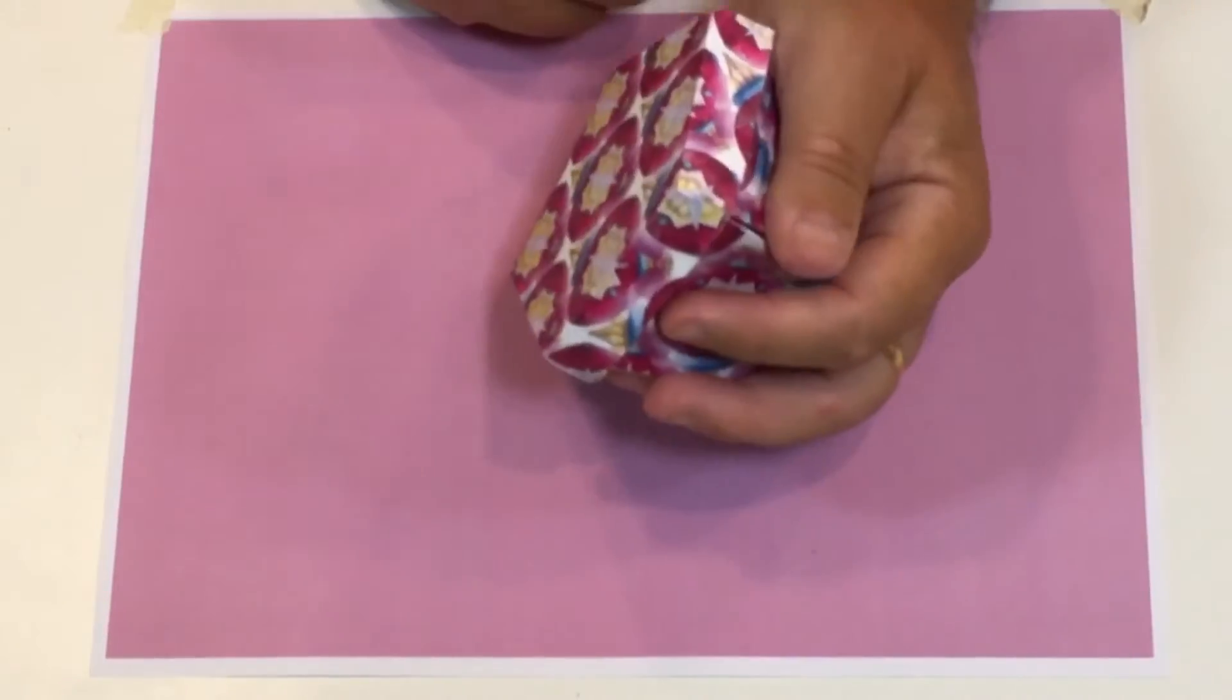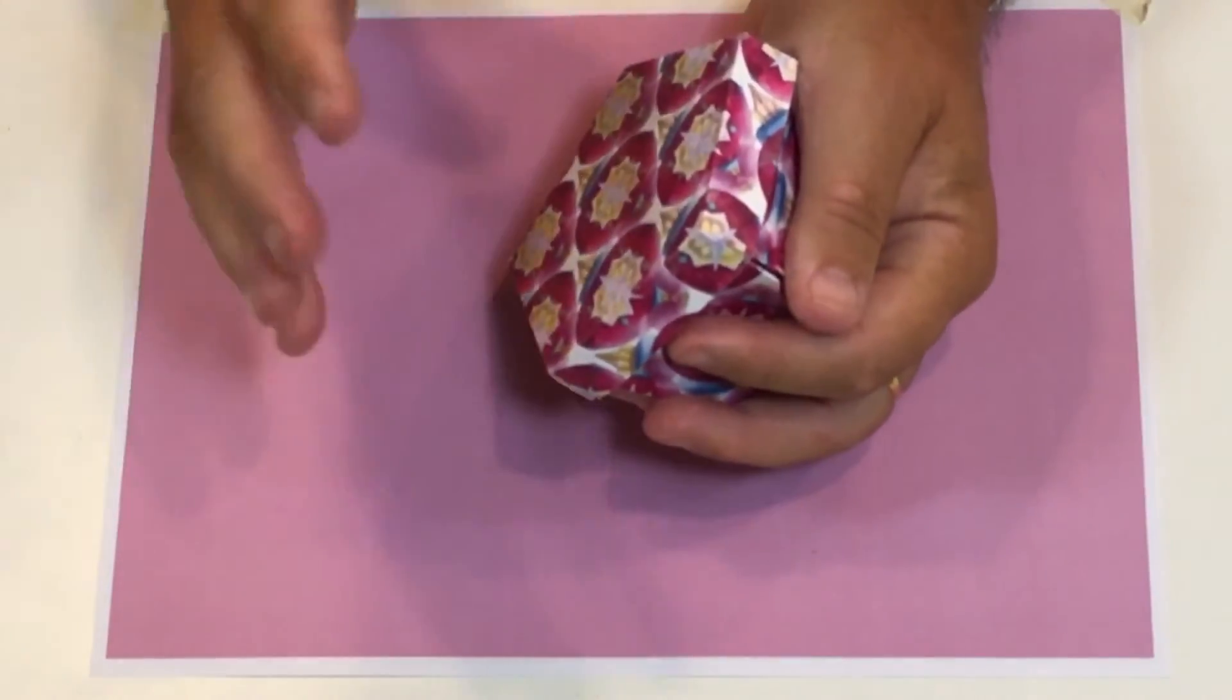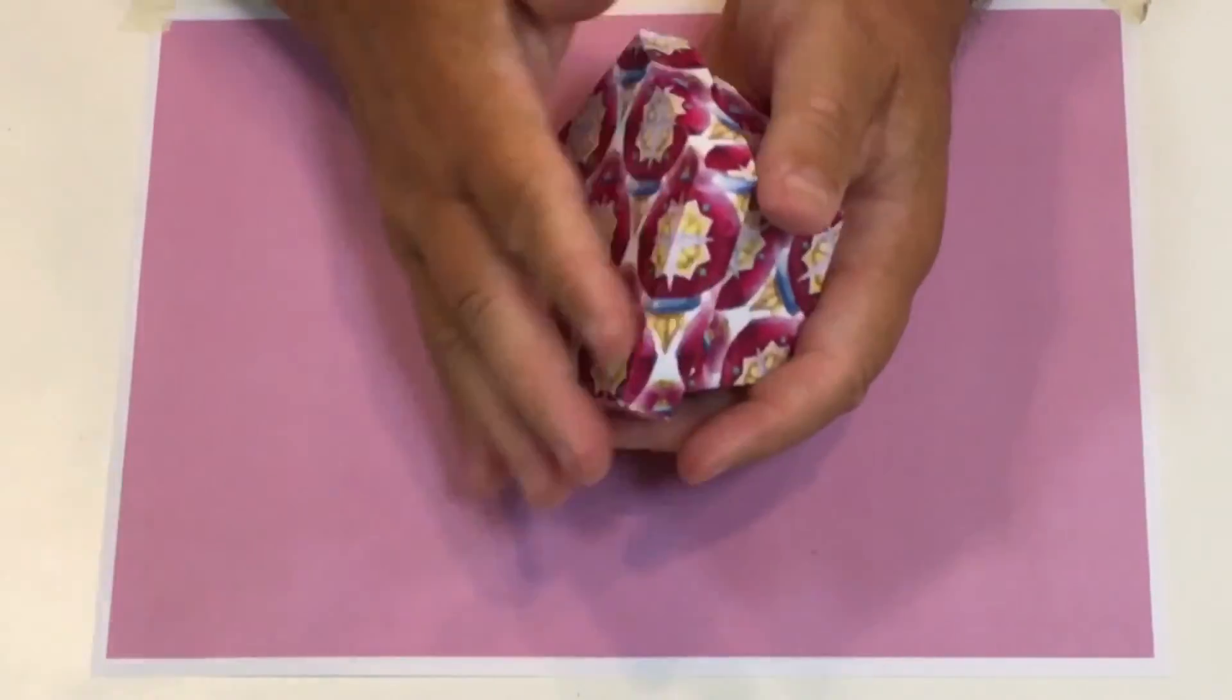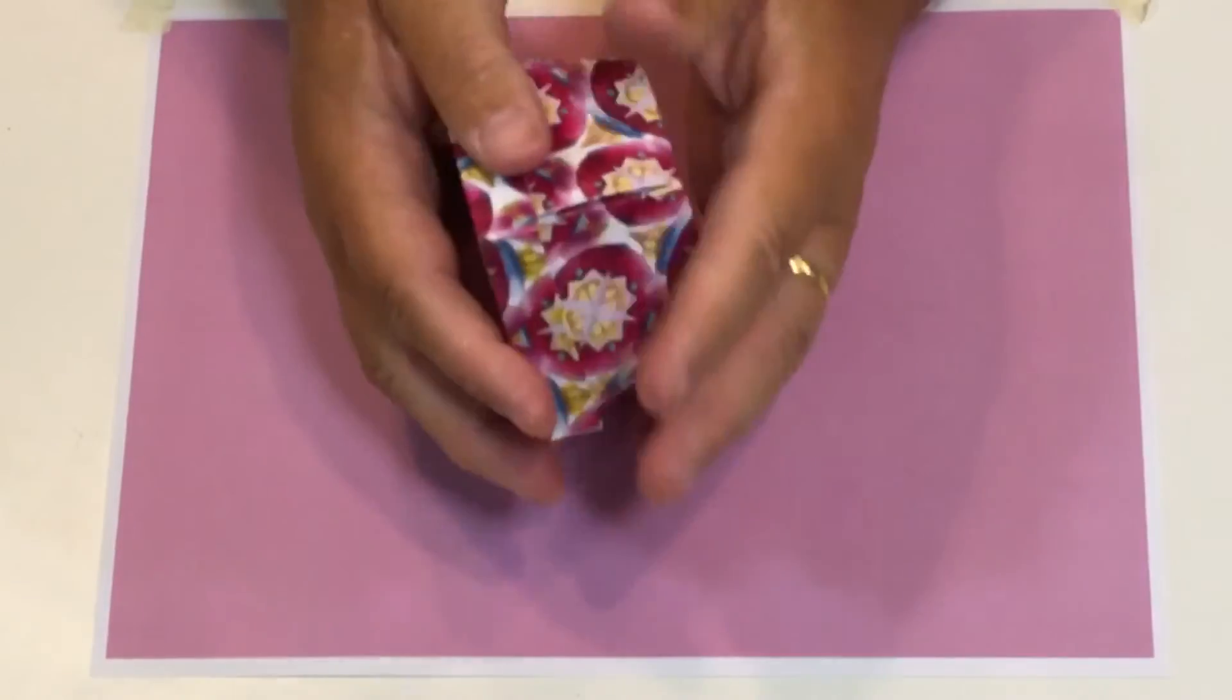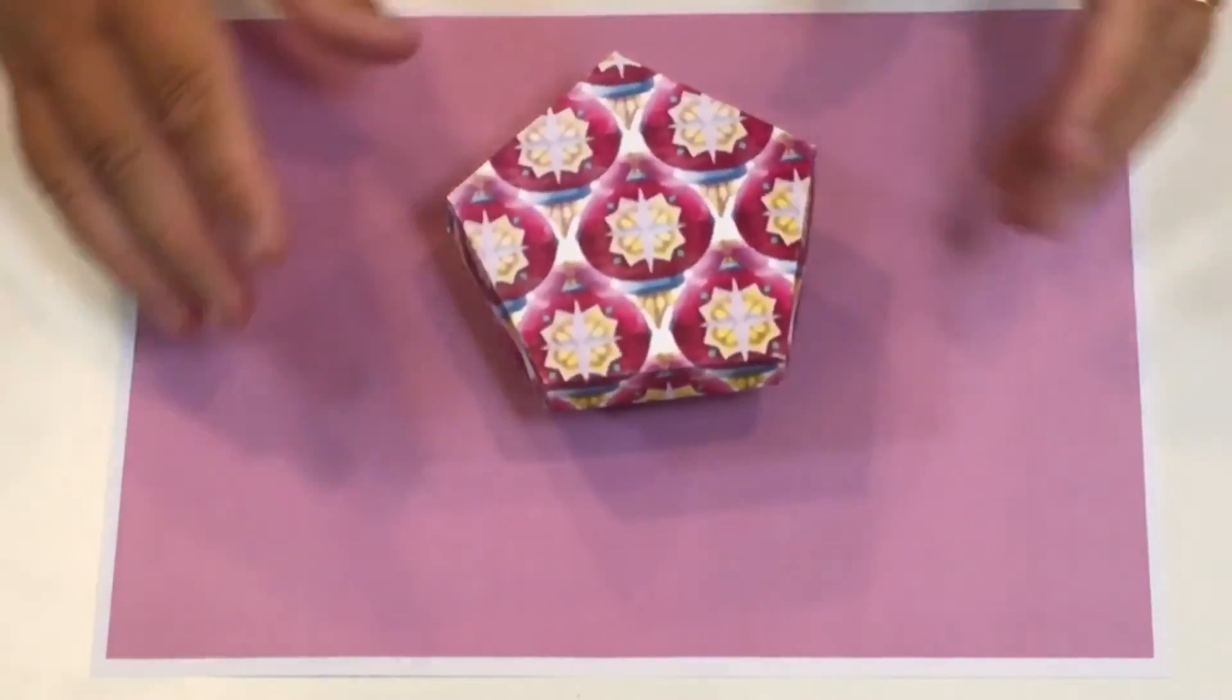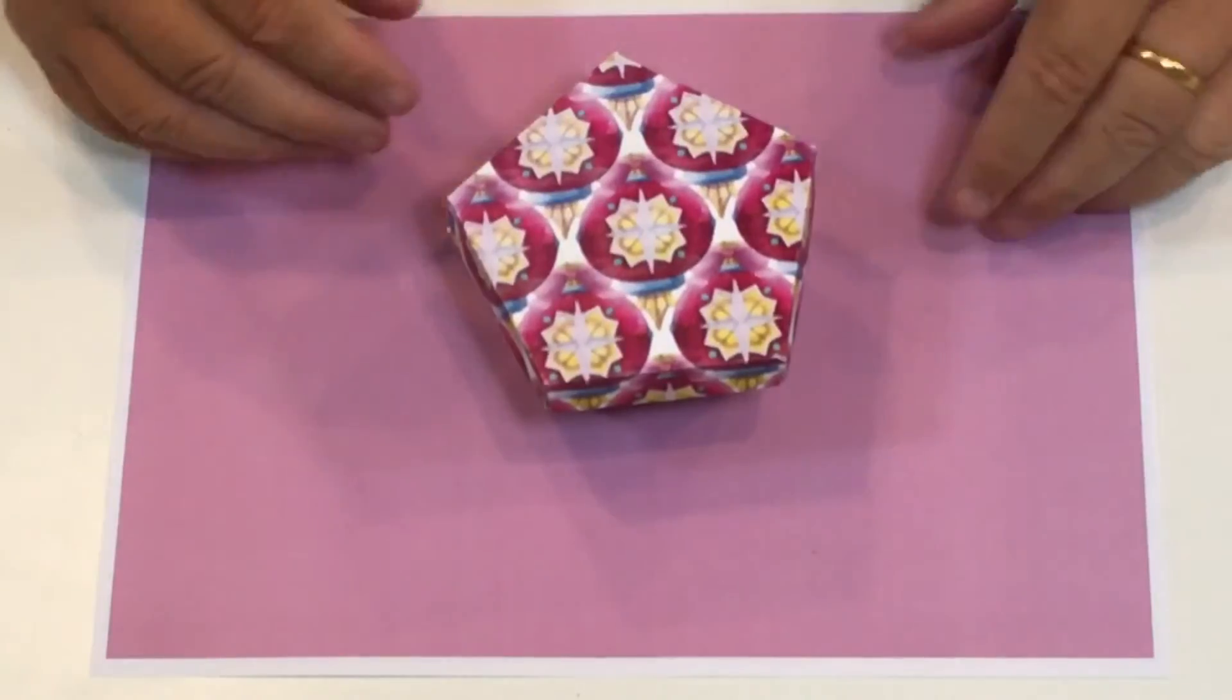And then you need to just scrunch it together with your hand and hold it together and place the lid on the top. A little bit fiddly at first, but once it's done, the paper kind of recognizes where it's got to go—makes it easier. So then you've got your box. You can fill that with whatever you want, sweeties or whatever.